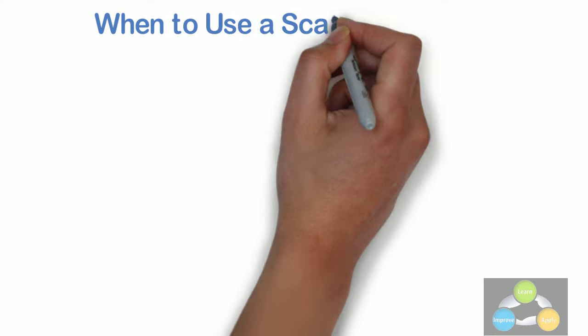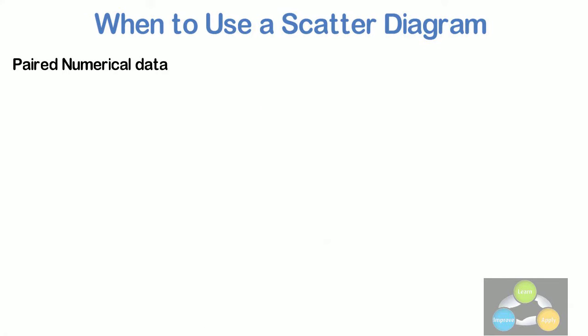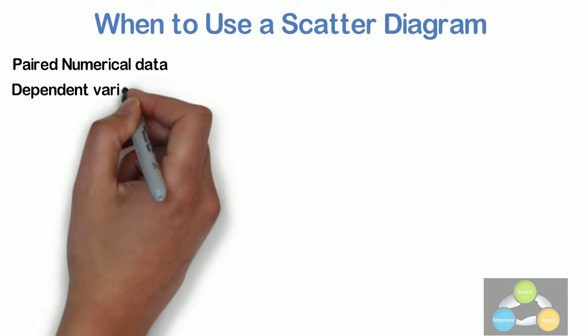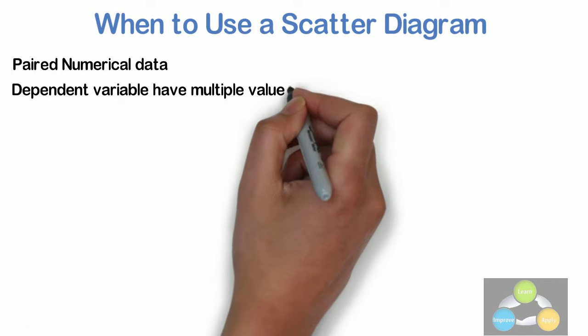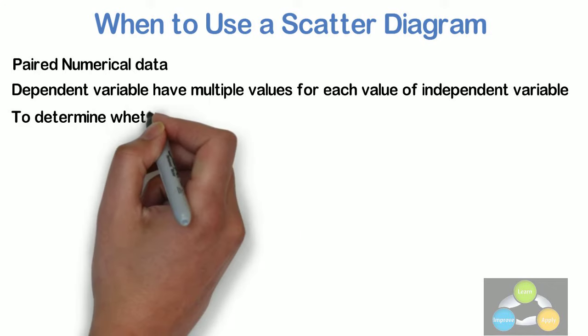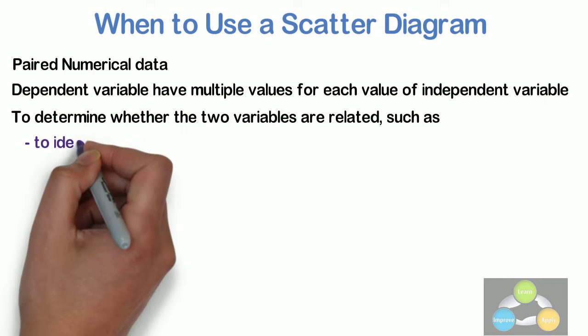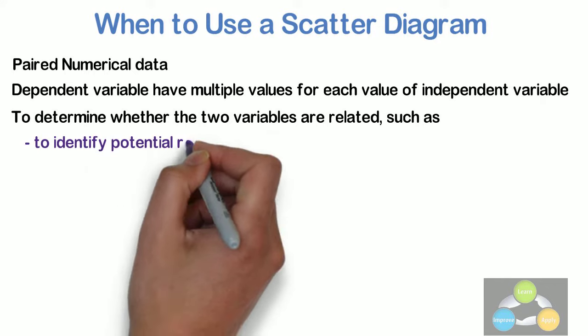When to use a scatter diagram. When you have paired numerical data. When your dependent variable may have multiple values for each value of your independent variable. When trying to determine whether the two variables are related such as when trying to identify potential root causes of the problems.